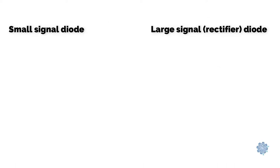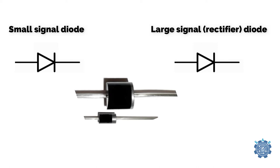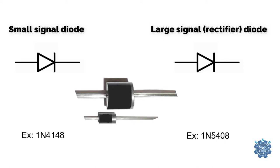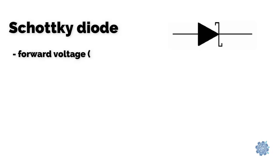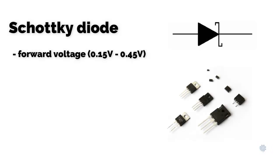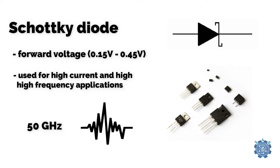Both of these types have the same symbol and they look the same but of course their coding is different. Schottky Diode is a diode that is mainly used due to its very low forward voltage drop and it can be used in high current and high frequency applications.